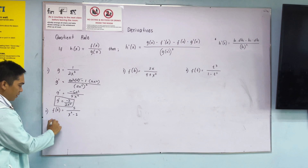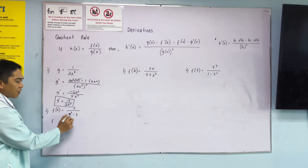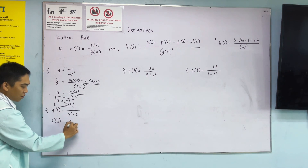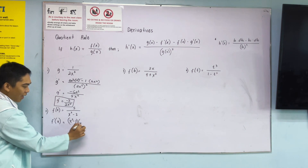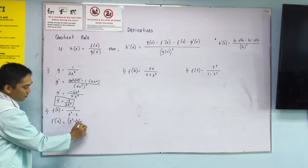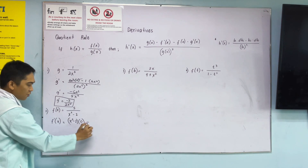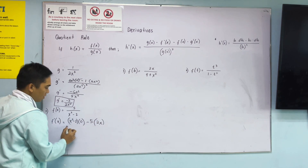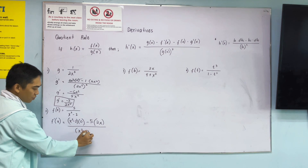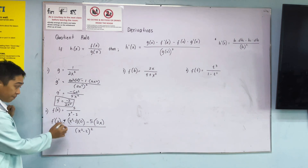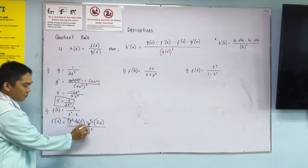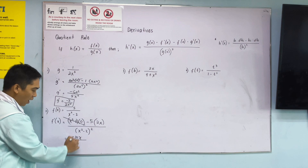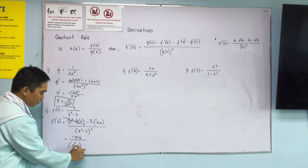Number 2: f of x is equal to 5 over x squared minus 2. To get the derivative, copy the denominator — x squared minus 2 — times its derivative, which is 0, minus 5 times derivative, which is 2x. All over x squared minus 2 squared. This is 0, so negative 5 times 2x is negative 10x, all over x squared minus 2 raised to 2.